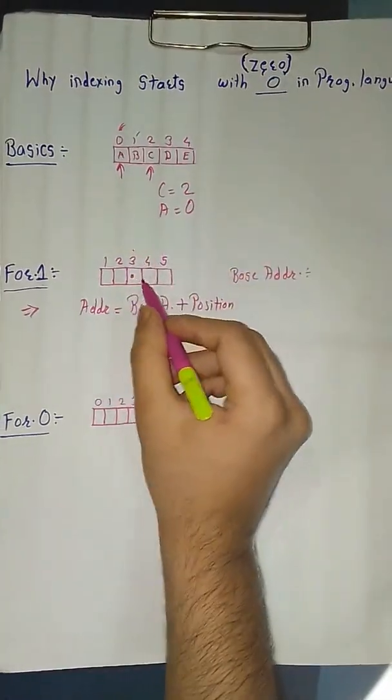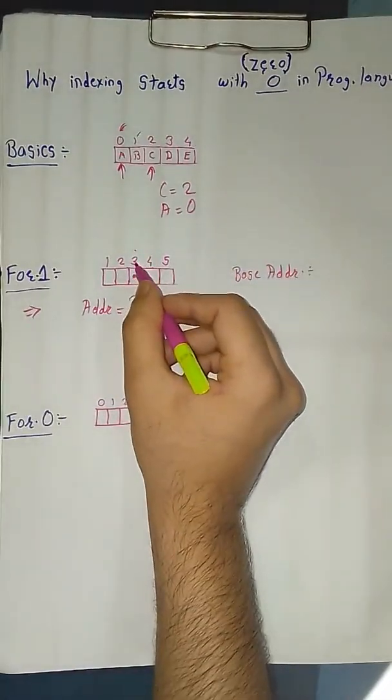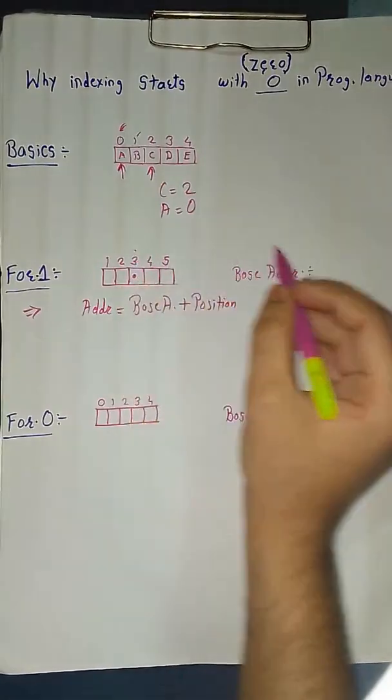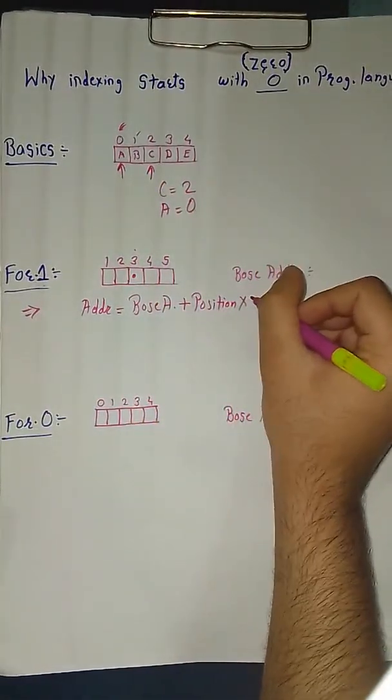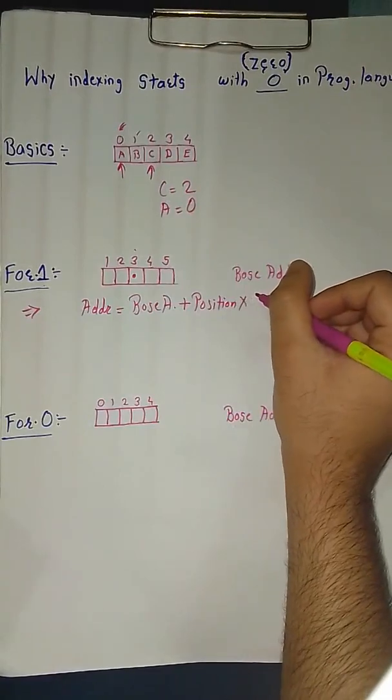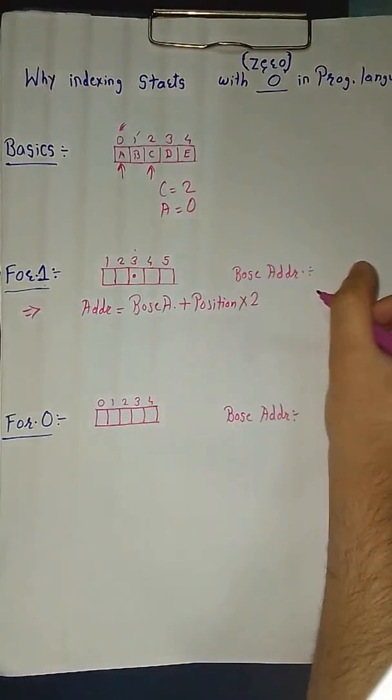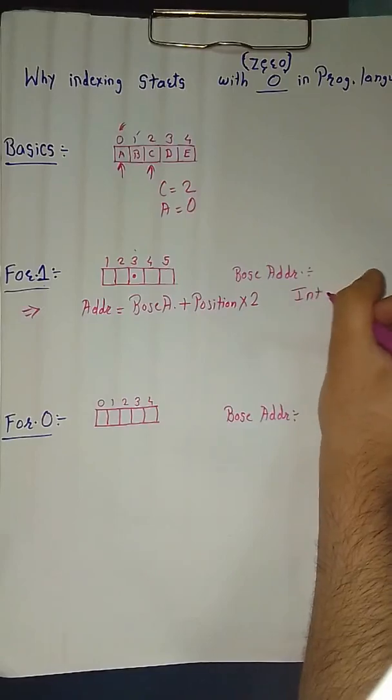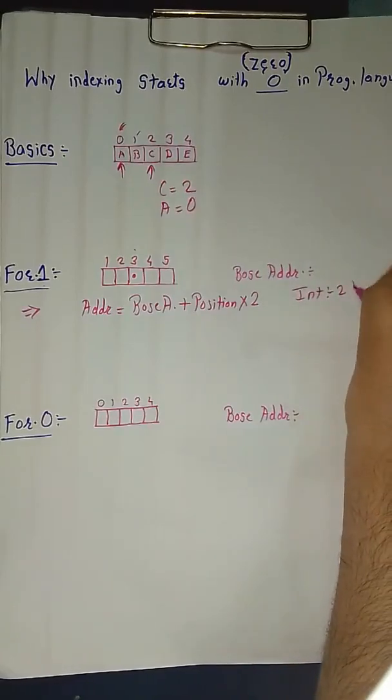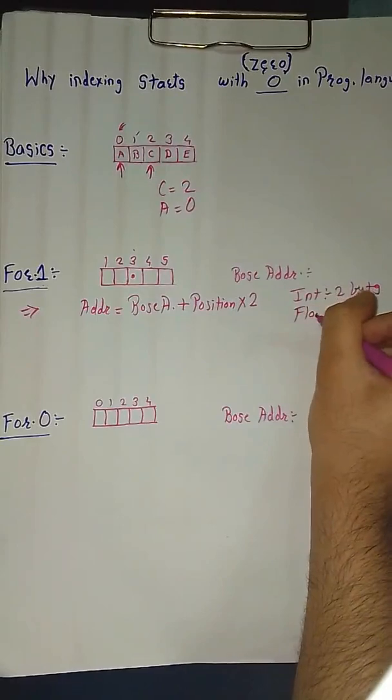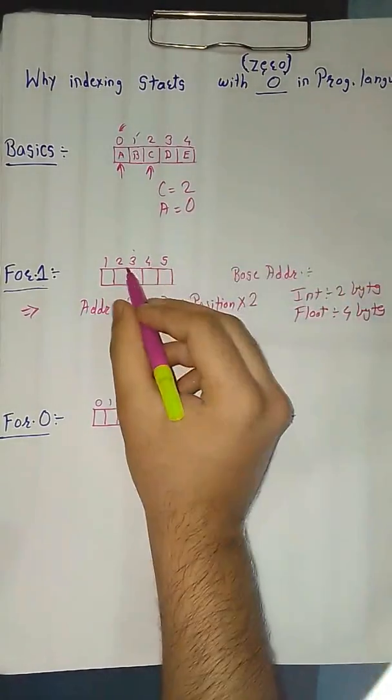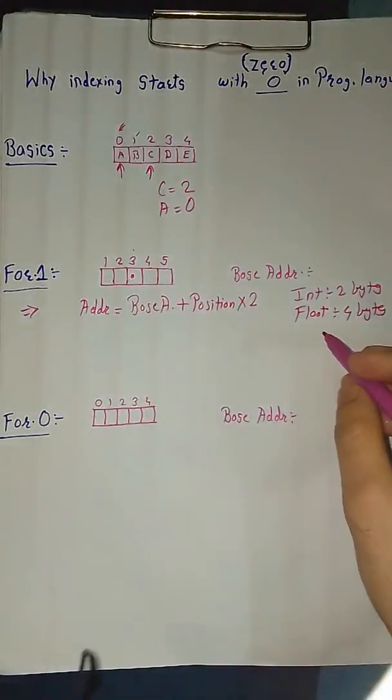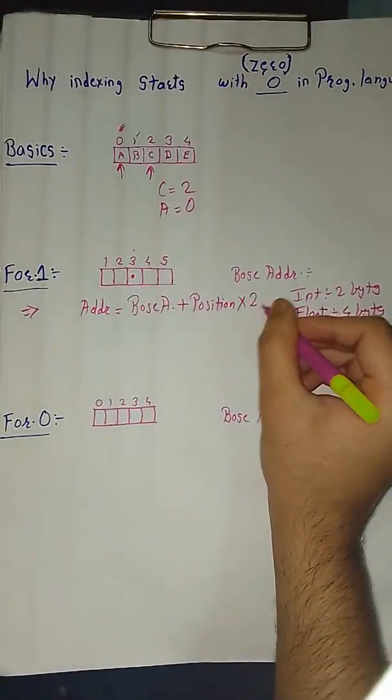So what does position mean? Position means we have to find the third element, so it is at position 3. And into size of the element, it will be 2 because it is an integer value. We all know that integer is of 2 bytes and float is of 4 bytes. This is an array of integer values, so we have taken 2 here.